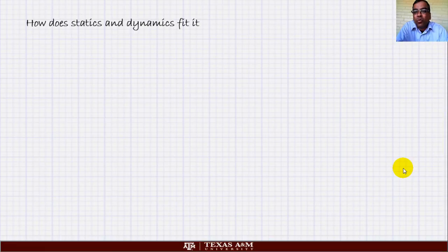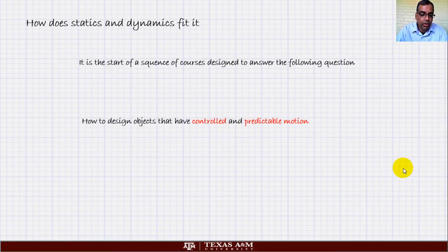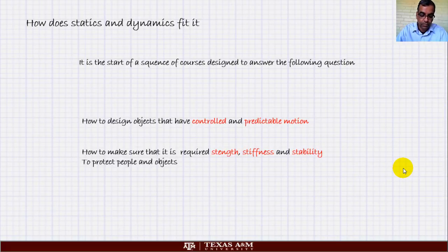Now coming back to statics and dynamics. Up to now we have been talking very broadly. Now we are going to look at something very specific. What is statics and dynamics and where does it fit in? The fundamental idea is that it is the start of a sequence of courses designed to answer the following question: how to design objects that have controlled and predictable motion? It has to have two things. First is I should be able to make it go where I want it to go, that's controlled motion. The second thing is if I repeat it, it should do the same thing, that's predictable motion.